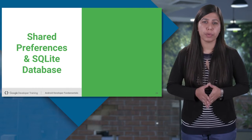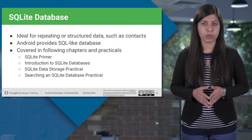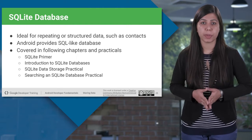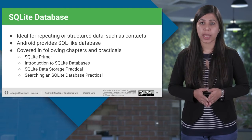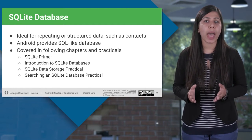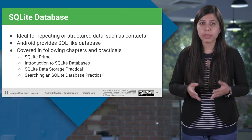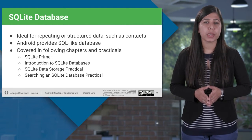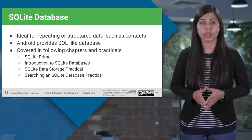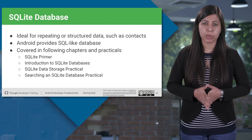Now let's have a quick overview of shared preferences and SQLite database. Another major storage option in Android is the database. Android uses a relational SQLite database designed for mobile applications. Using a database is ideal when you have thousands of records to be stored in a structured way — for example, contacts — and you will be using those records repeatedly. We will be covering this in detail in upcoming sessions.